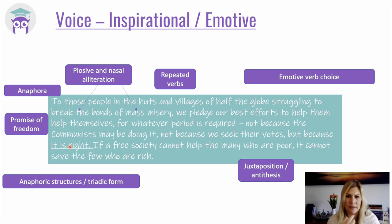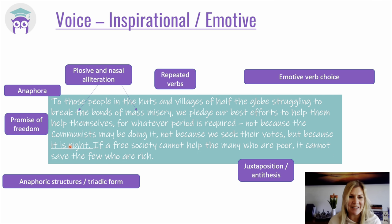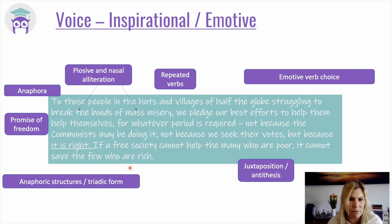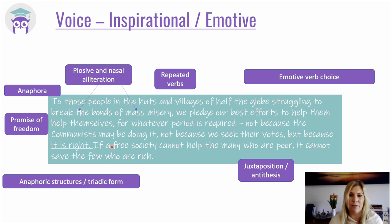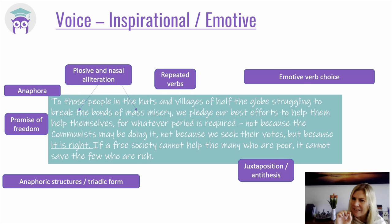Then we've got this lovely antithesis: 'If a free society cannot help the many who are poor, it cannot save the few who are rich.' It's almost epigrammatic — the balance and rhythm of it. Note the repetition of 'free' — now used as an adjective, 'a free society' — again positioning America as free. And note this tiny sense of threat in there too: there are things to be concerned about.